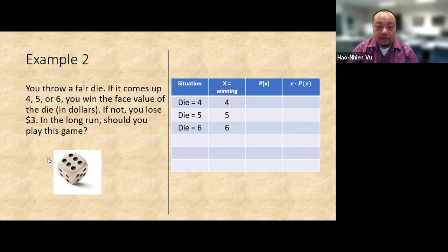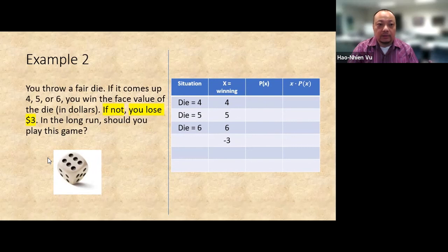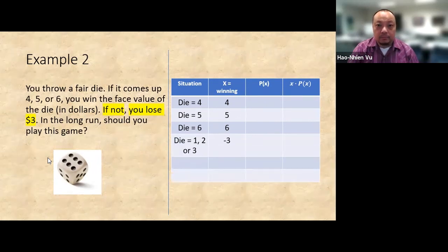Any other winnings? Yep, here it is. A loss of three dollars, which is a winning of negative three. Put that in. Now I need the description of the situation. When is it that I lose three dollars? It says if not. If not what? If I don't roll a four or five or six, meaning if I roll a one, two, or three. So put that in. There.